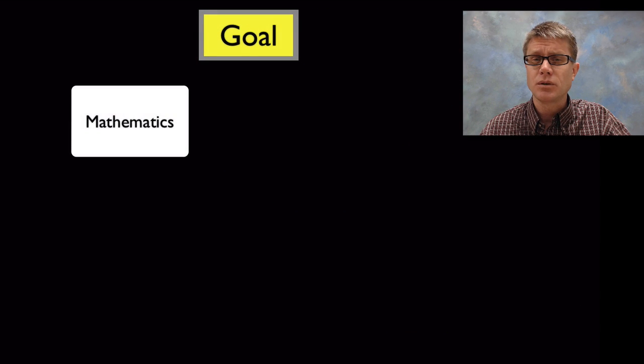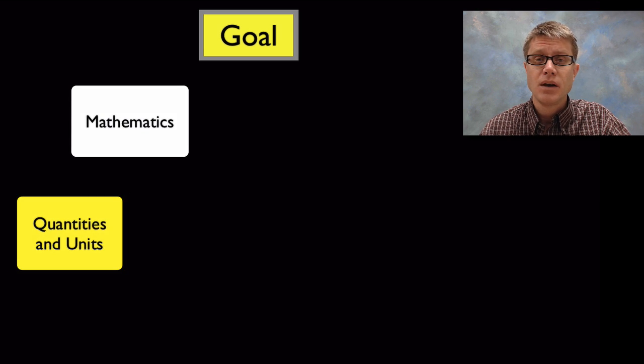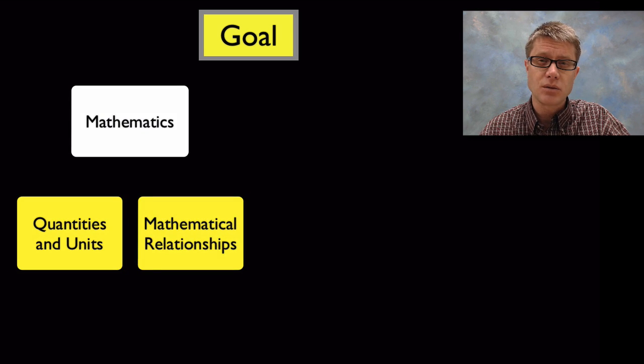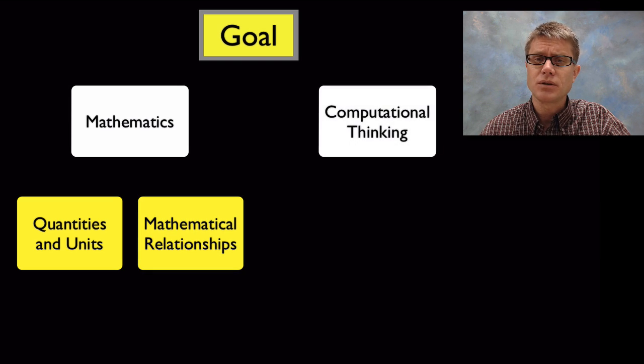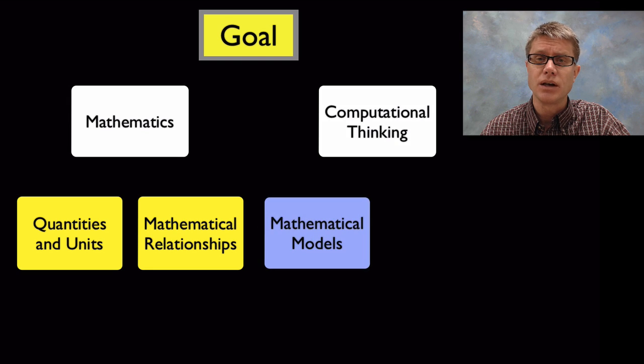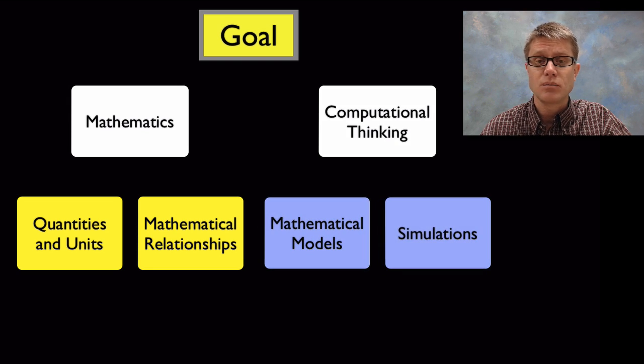And so what do we want our students to be able to do? We want them to be able to use mathematics in the science classroom. And that starts with looking at quantities and proper units. And then starting to establish mathematical relationships. We also want them to start doing some computational thinking. And we can do that in two ways. We can have them start building models and then we can actually run simulations.